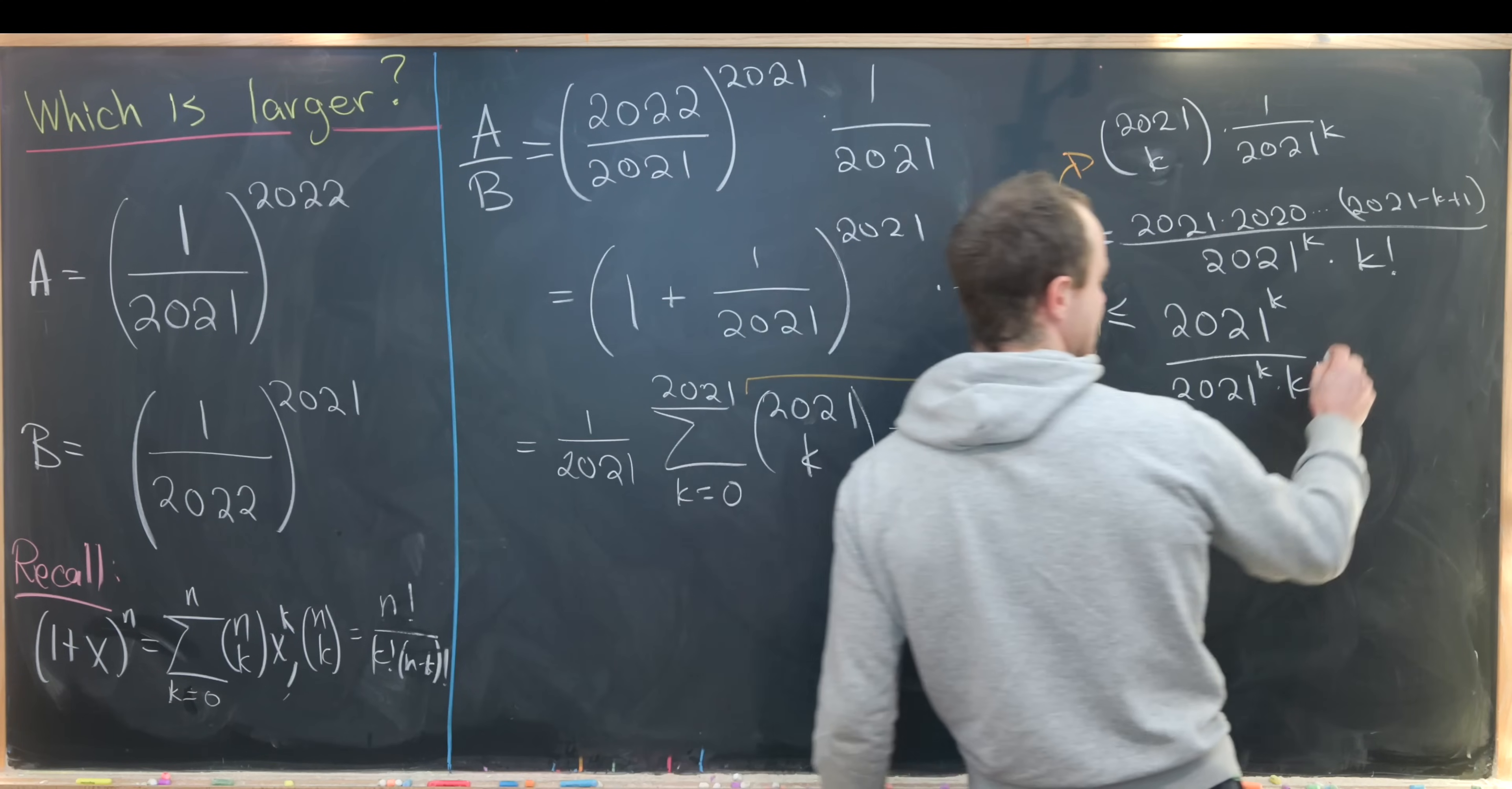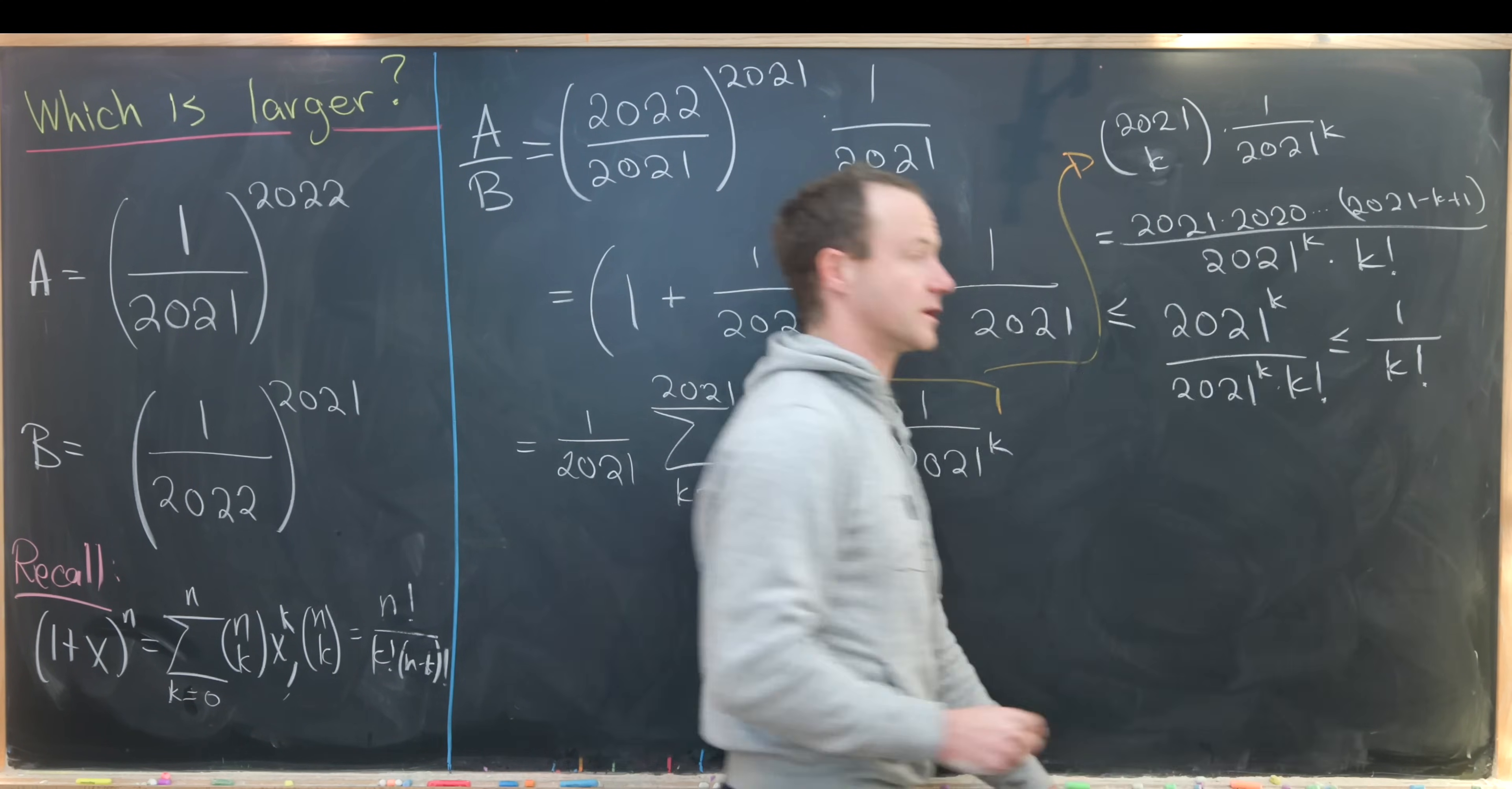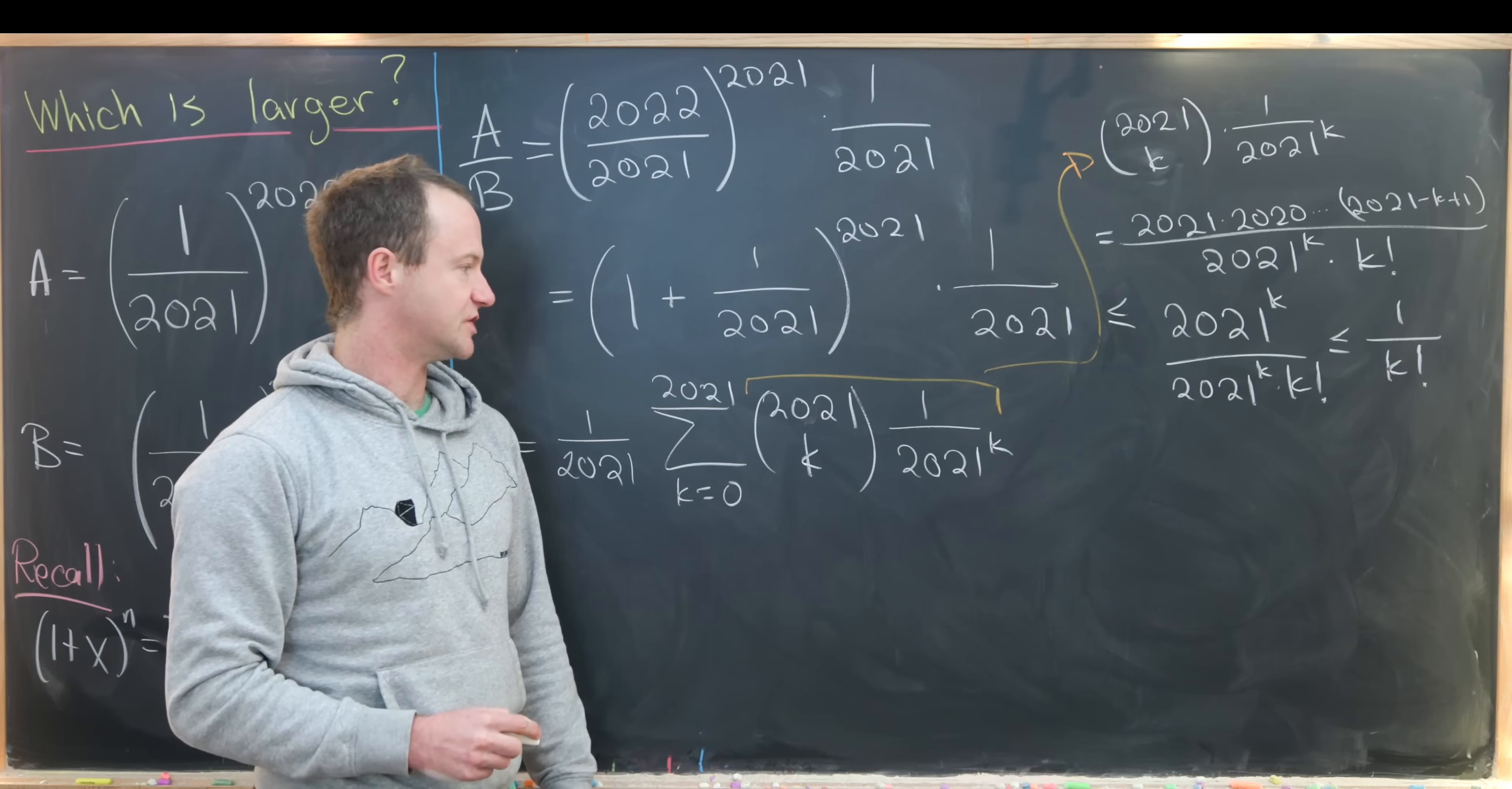That makes this less than or equal to 1 over k factorial, where now we can see this inequality is strict if k is bigger than or equal to 2.